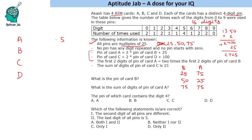Similarly, for the condition PIN of card C = 2 × PIN of card D + 100: if D ends in 25, then 25 × 2 = 50, plus 100 = 150, so last two digits are 50. If D ends in 50, then 50 × 2 = 100, plus 100 = 200, giving 00 — but 00 is not possible since digits cannot repeat. If D ends in 75, then 75 × 2 = 150, plus 100 = 250, so last two digits are 50. Therefore, the last two digits of C must be 50, and the last digit of D is 5.